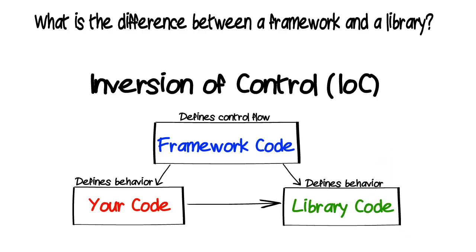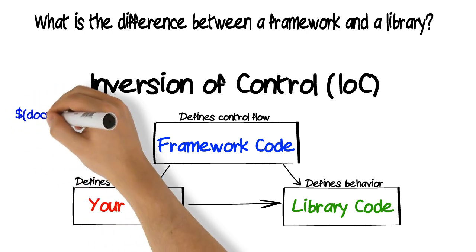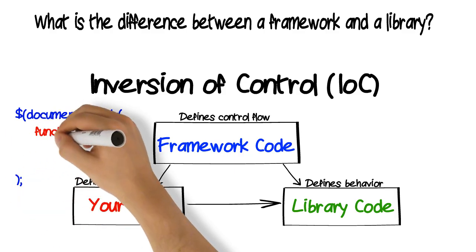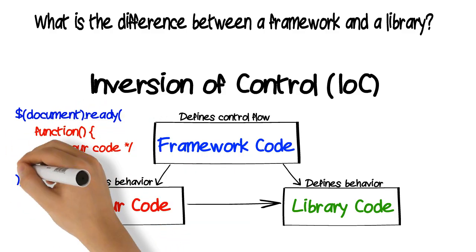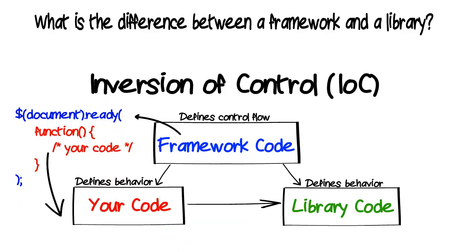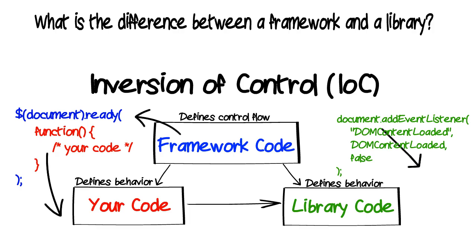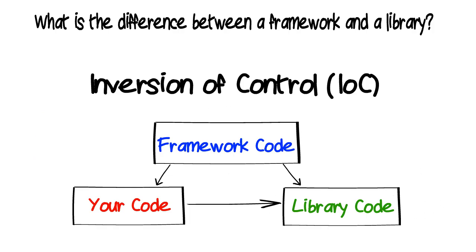This can also be easily observed in something like jQuery, which is a JavaScript framework, when you do something like document on ready. It is the framework that will be making the call to this callback that you have defined when the document is in a ready state. This is the flow of control portion of the framework, which it is now responsible for.